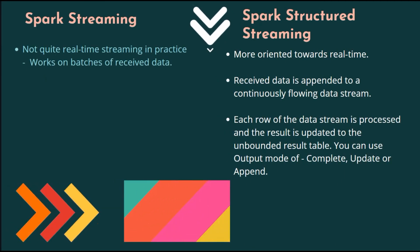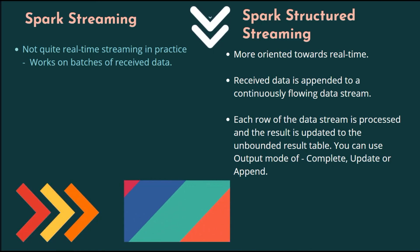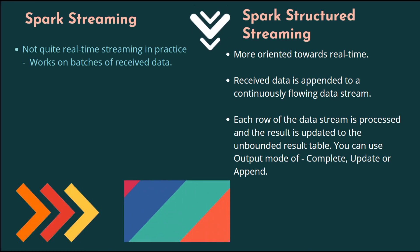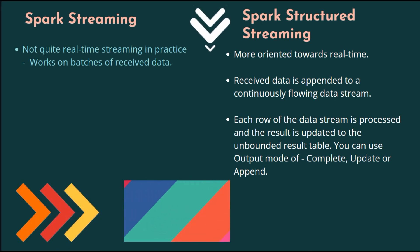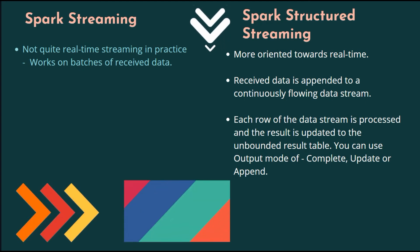Spark Streaming is not quite real-time streaming in practice — it works on batches of received data. Whereas Spark Structured Streaming is more oriented towards real-time: the received data is appended to a continuously flowing data stream, each row is processed, and the result is updated to an unbounded result table. You can use an output mode of complete, update, or append depending on how you wish to use the results.